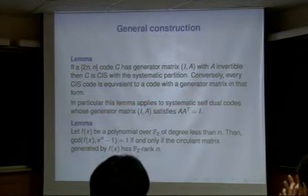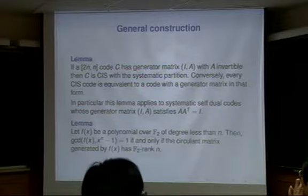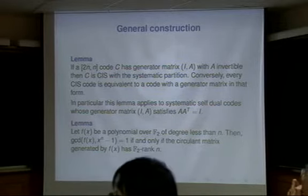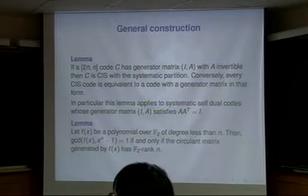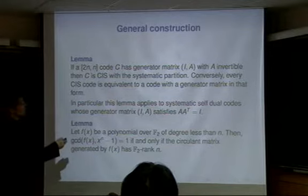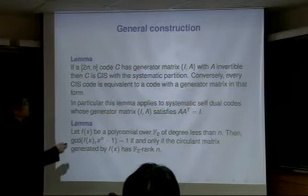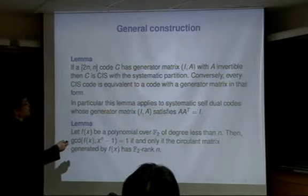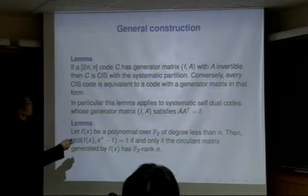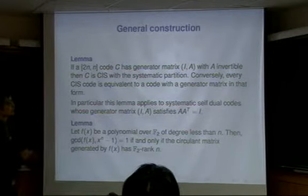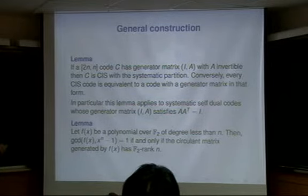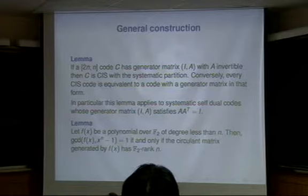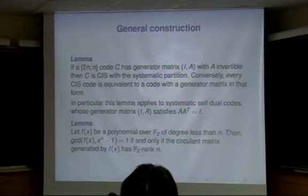From now on, let me give you a more general construction for the CIS code. The CIS code has codewords as any linear combination of all the rows of the generator matrix. The CIS condition says that A is invertible. If a code C has generator matrix [I | A] with A invertible, then C is CIS with a systematic partition. Conversely, every CIS code can be transformed to a code with a generator matrix in that form by column permutations — you apply Gauss elimination and then move columns to get the identity.